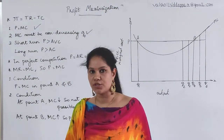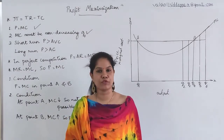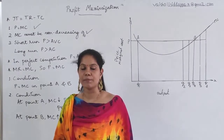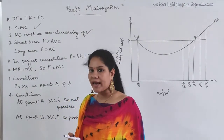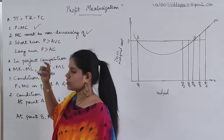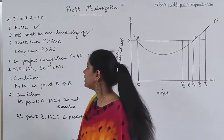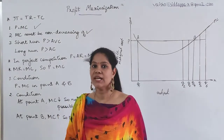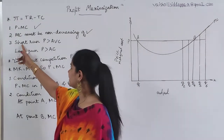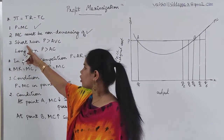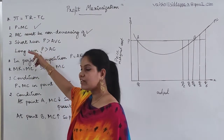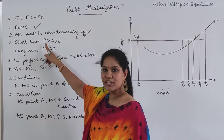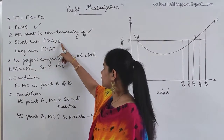What are these three conditions? The first condition is P should be equal to MC — price should be equal to marginal cost. The second condition is MC must be non-decreasing at Q0. The third condition involves the short run and the long run. In the short run, we have to fulfill these three conditions, where price should be greater than AVC — average variable cost.